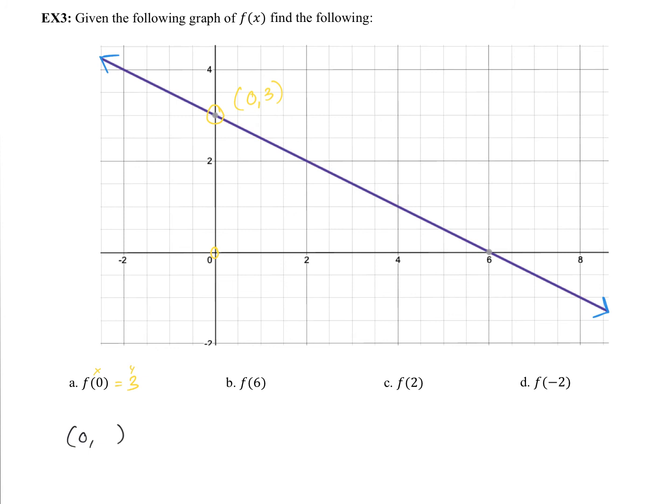Okay, let's find the next one. f of 6. Well, this is saying, when x is 6, what is y? Well, let's look at that. Where is x equal to 6? x is equal to 6 right here. And that point is 6, 0. So, when x is 6, y is 0.